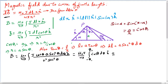Here, i is the current in the wire, dL is the length element of the wire, and r-hat is the unit vector which points from dL to the point where we want to measure the magnetic field. r is the distance between those two points, and mu naught over 4 pi is the constant of proportionality. The magnetic field is inversely proportional to r squared.